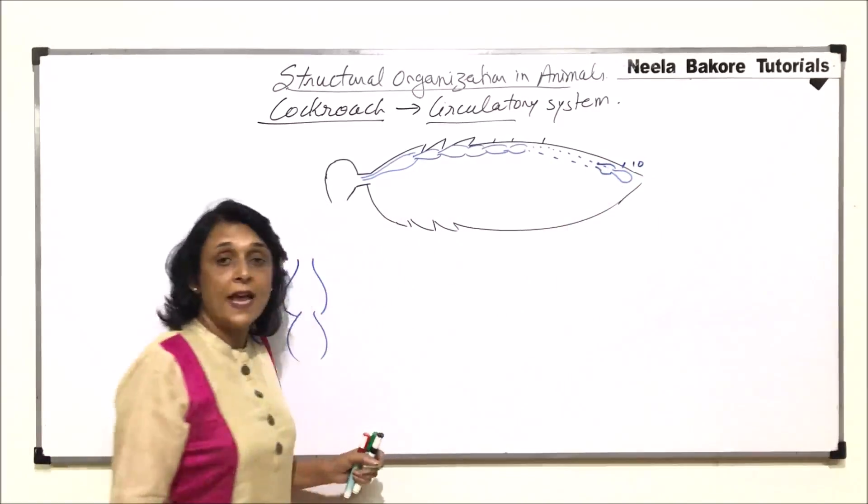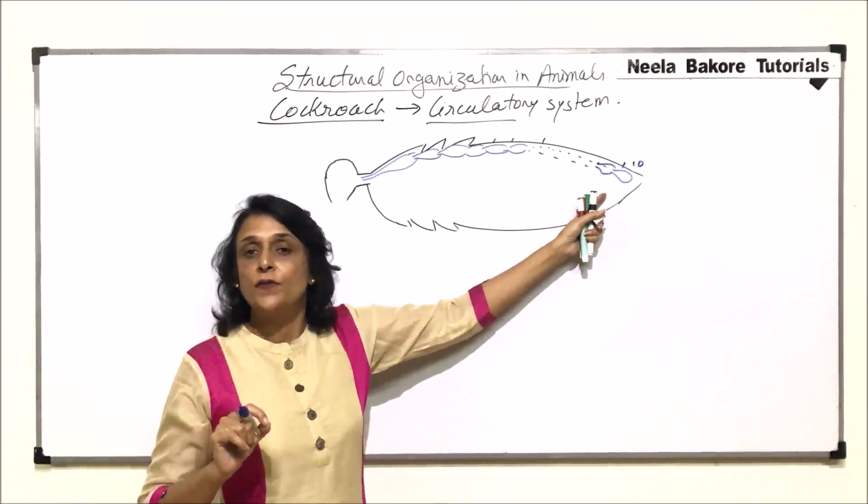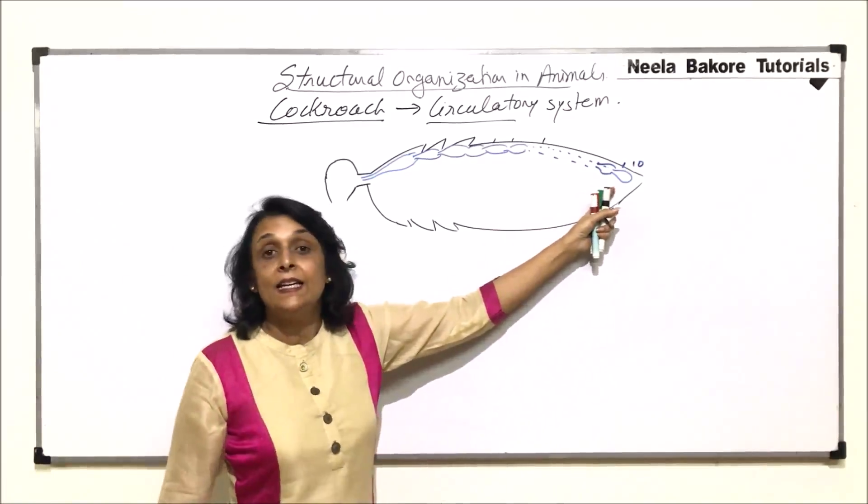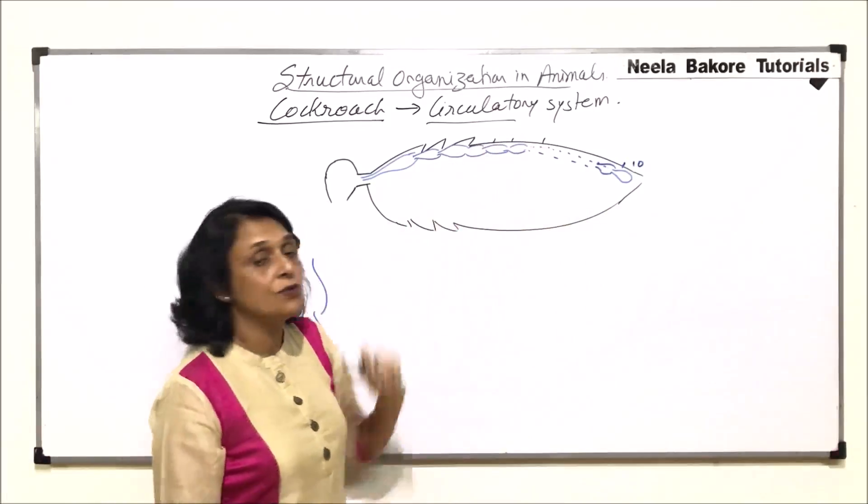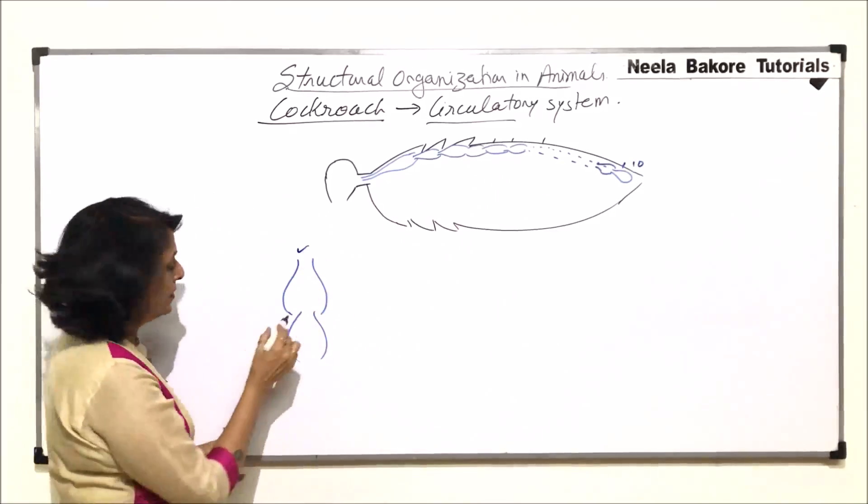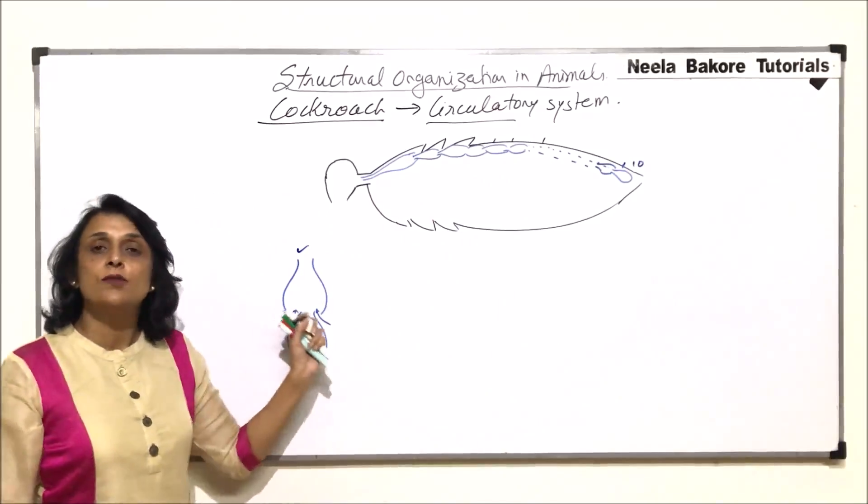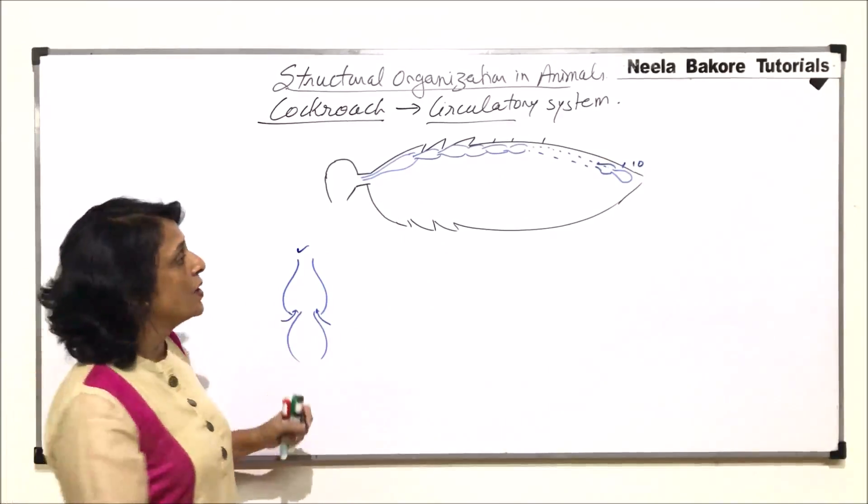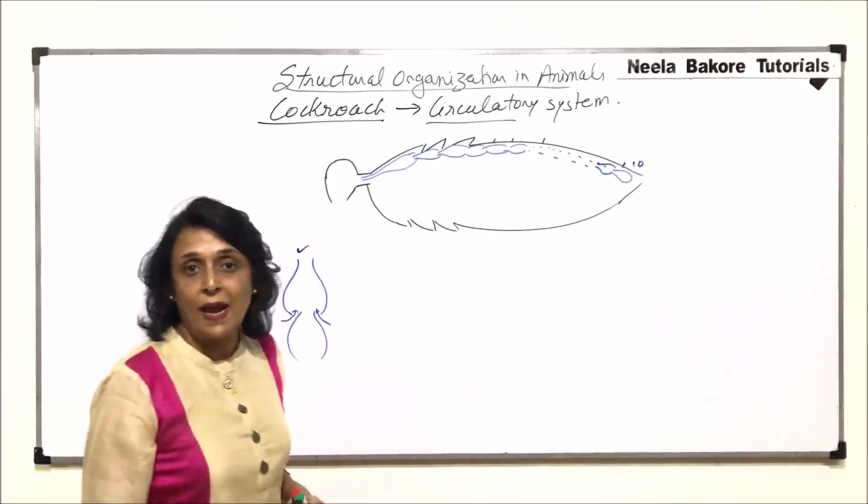So 10th segment has the last chamber of the heart and it is blunt ended. That means all these chambers, they were having two openings, one opening on the anterior side and the other opening on the posterior side, which are called the ostea through which the blood is going to enter into these chambers. This one is closed from the posterior end.